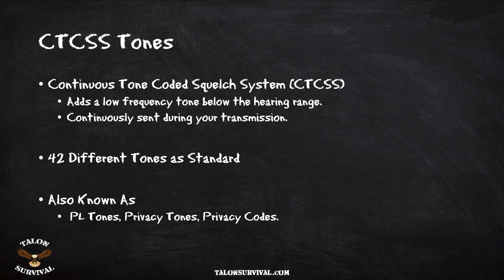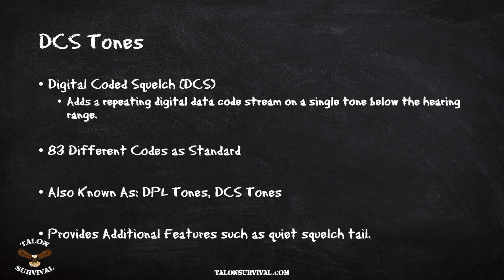You may also see CTCSS tones called PL tones, or private line tones, privacy tones, or sometimes privacy codes. The next type is Digital-Coded Squelch, or DCS. Digital-coded squelch is essentially a newer, upgraded version from CTCSS. What it does is add a repeating digital data code stream onto a single sub-audible tone — again, below the hearing range.